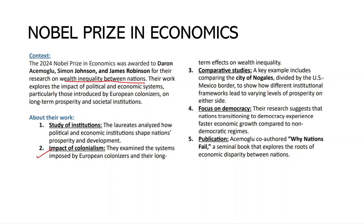For comparative analysis, they used the example of a city called Nogales, situated on the US-Mexico border, showing how different institutional frameworks lead to varying levels of prosperity on either side. They also focused on democratic institutions, and their work was published in a co-authored book called 'Why Nations Fail,' which explores economic disparity between nations.